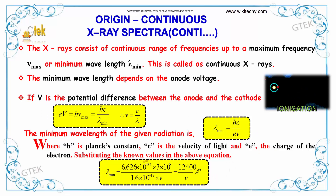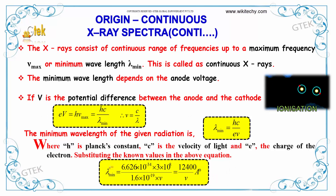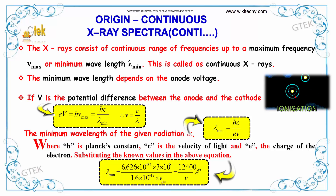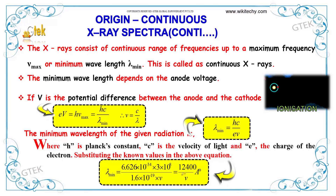Substituting the known values into the above equation, we get lambda minimum = (6.626 × 10⁻³⁴ × 3 × 10⁸) / (1.6 × 10⁻¹⁹ × V), which equals 12,400 / V angstroms.